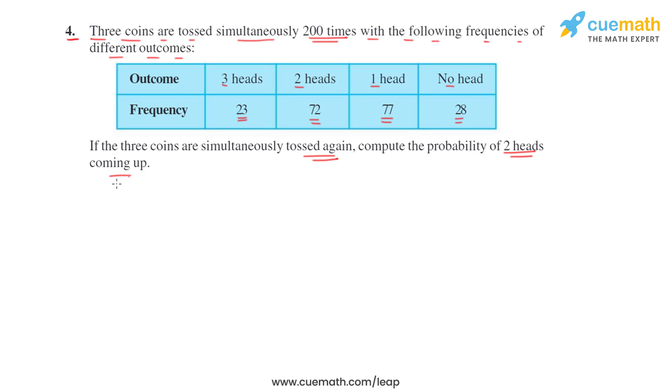We have to find the probability of two heads, so it will be the number of times two heads appeared divided by the total number of times coins were tossed.